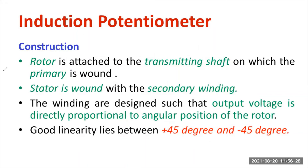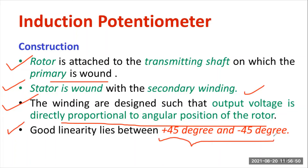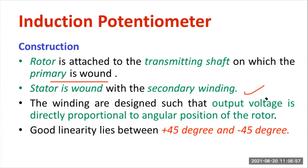The rotor is attached to the transmitting shaft and the primary winding is wound on it. The stator is wound with the secondary winding. The windings are designed such that the output voltage is directly proportional to the angular position of the rotor, making it a position sensor. It provides linearity in the range of plus and minus 45 degrees; beyond that it becomes nonlinear, which is one setback of the induction potentiometer.